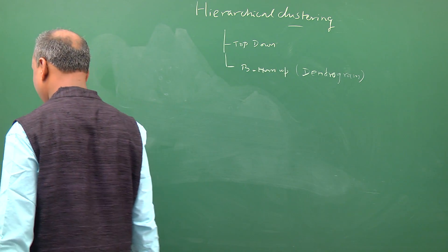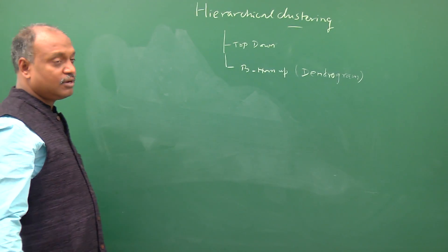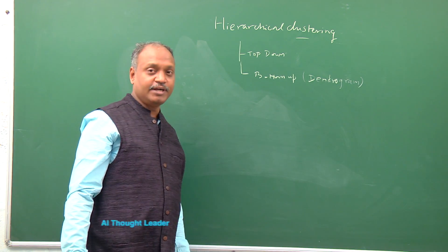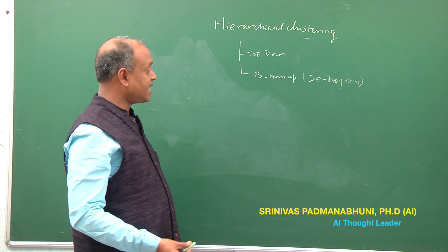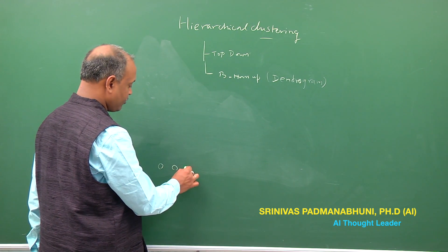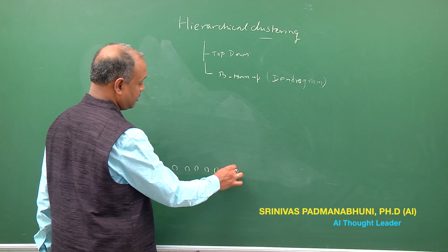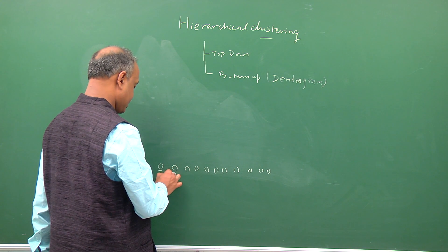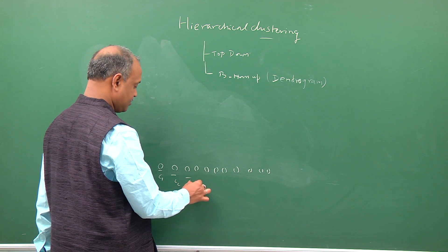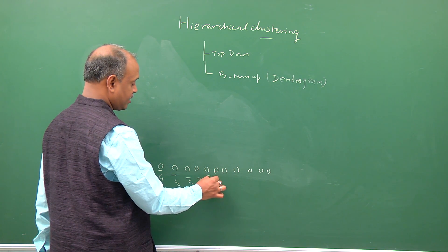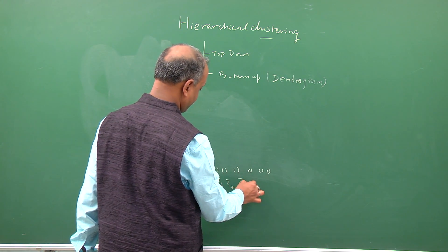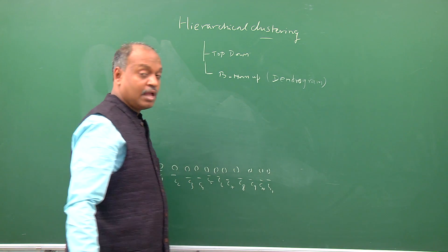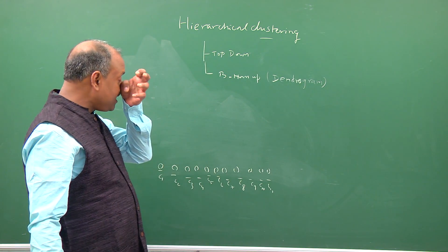Dendrogram is basically a visual tree formed by coalescing data points to form clusters as we go along. Suppose we have lot of data points in the original data. So in bottom-up we initially assume that each original point is a separate cluster, and then what you do is you iteratively merge the two nearest clusters into one.